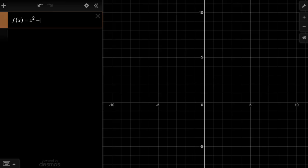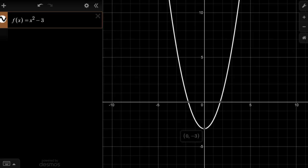If we subtract one, or actually, let's subtract three. Notice, it shifted it down. The vertex was right over here at zero, zero. Now it is at zero, negative three, so it shifted it down.